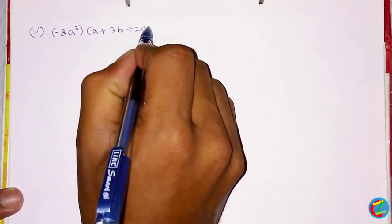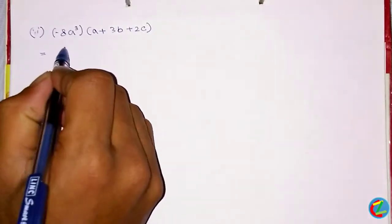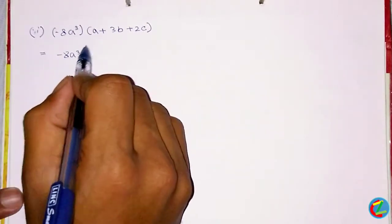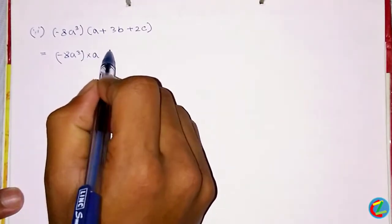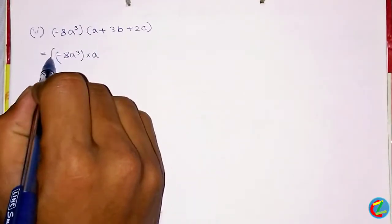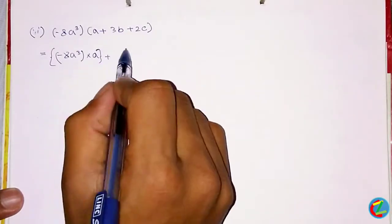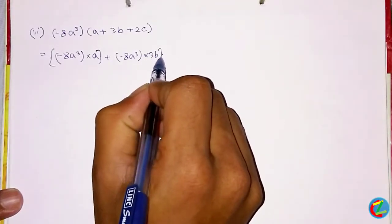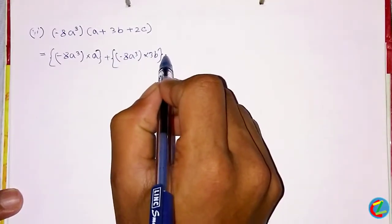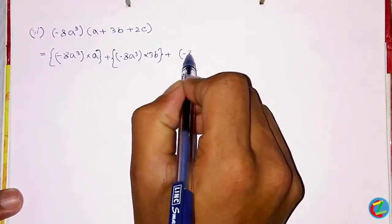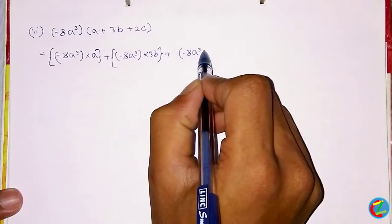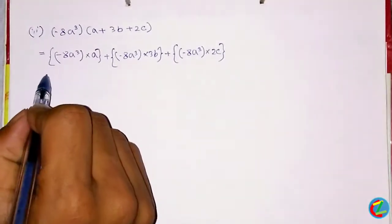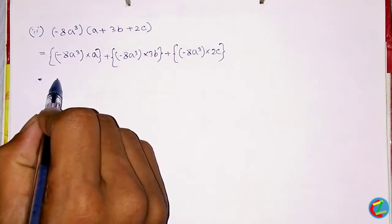Minus a cube whole into a plus 2b plus 2c whole. I will follow up on this.